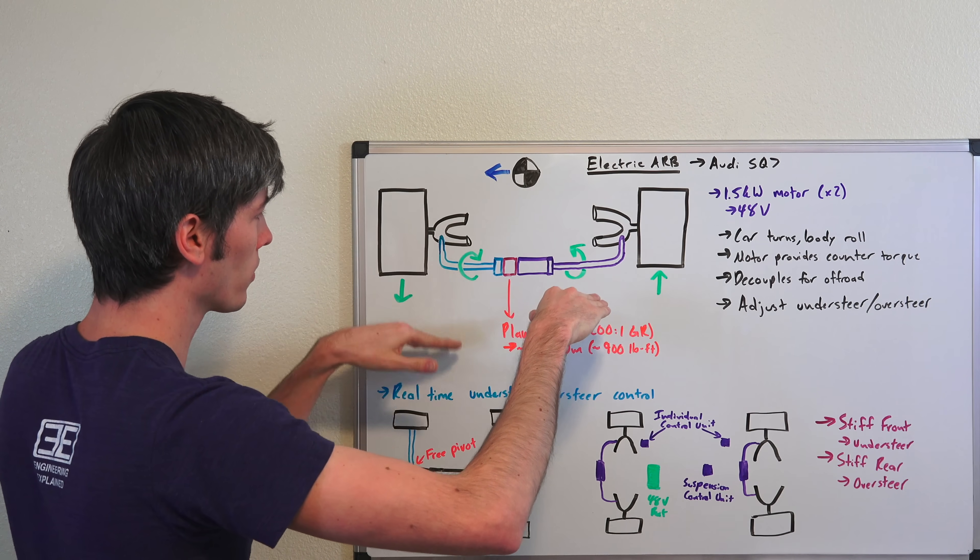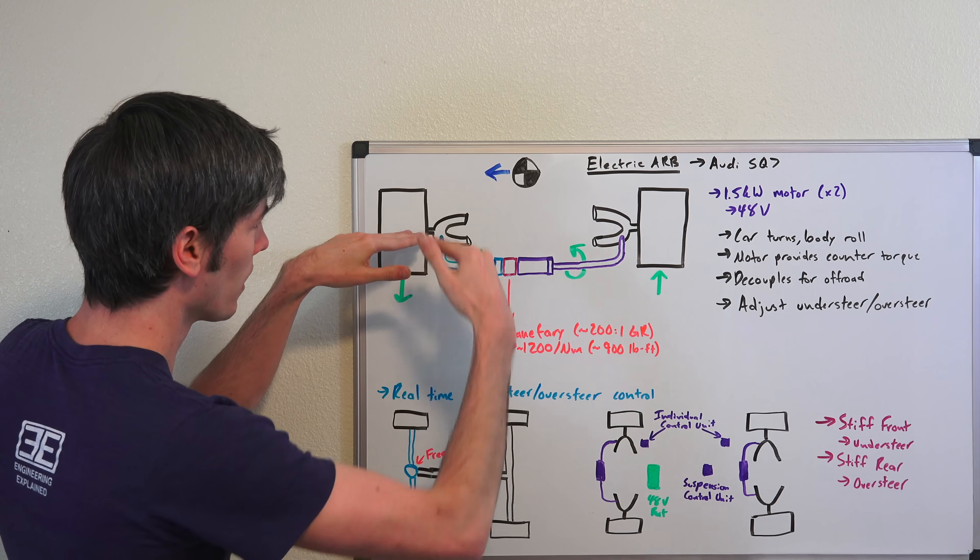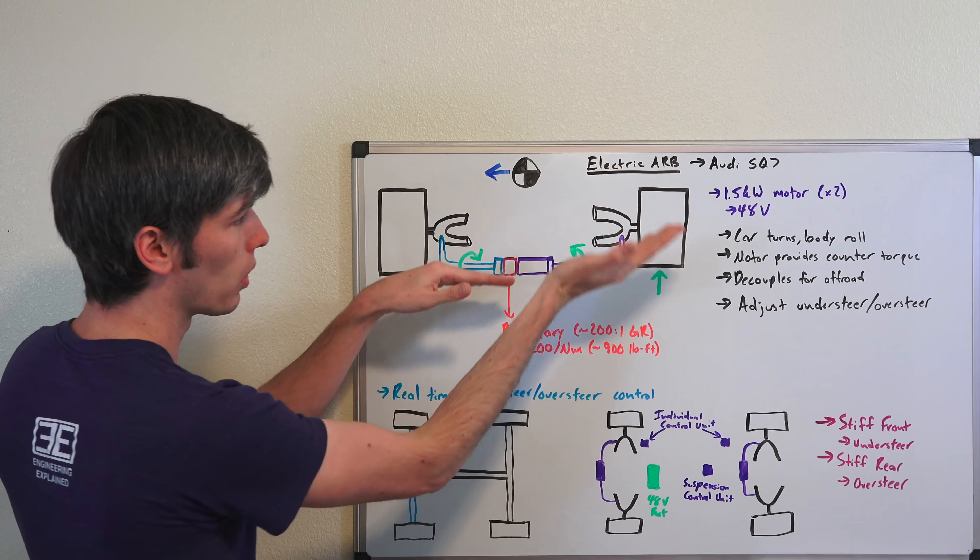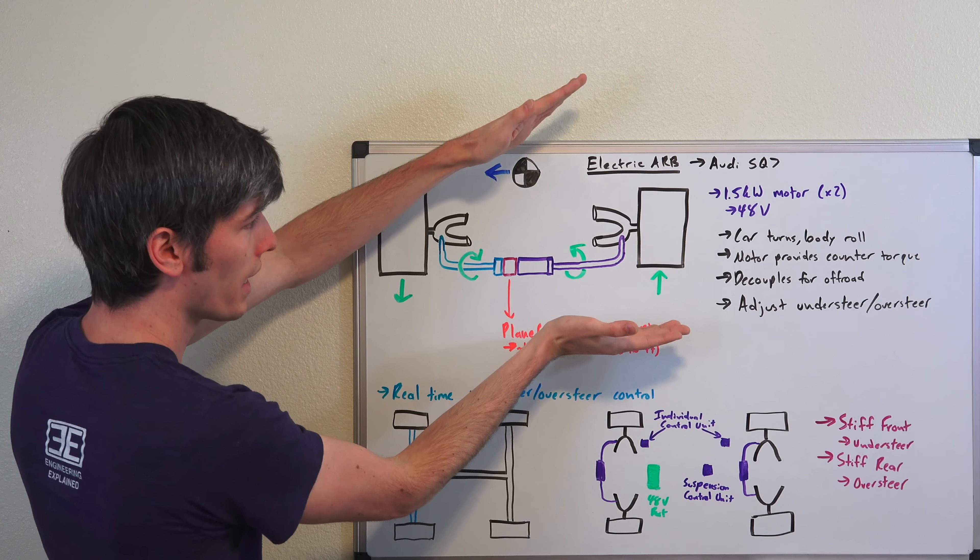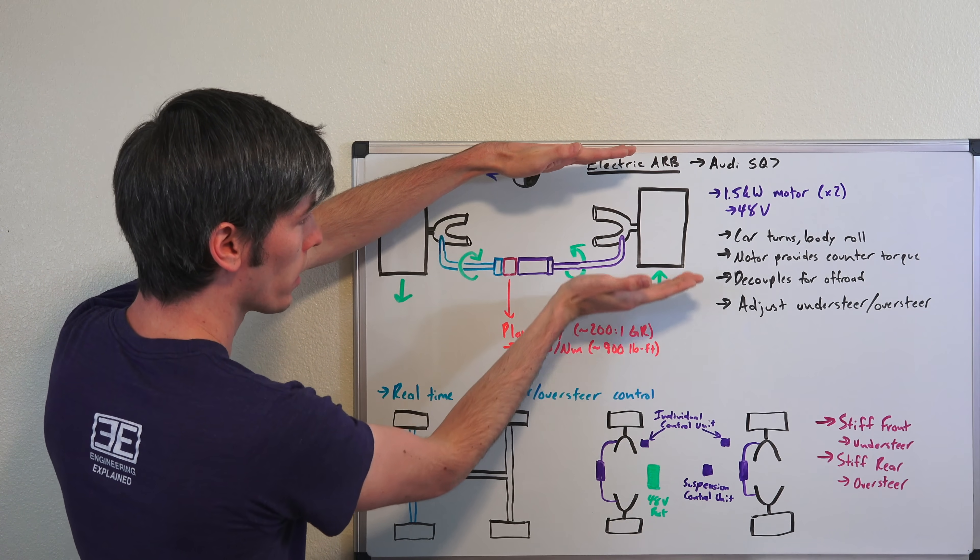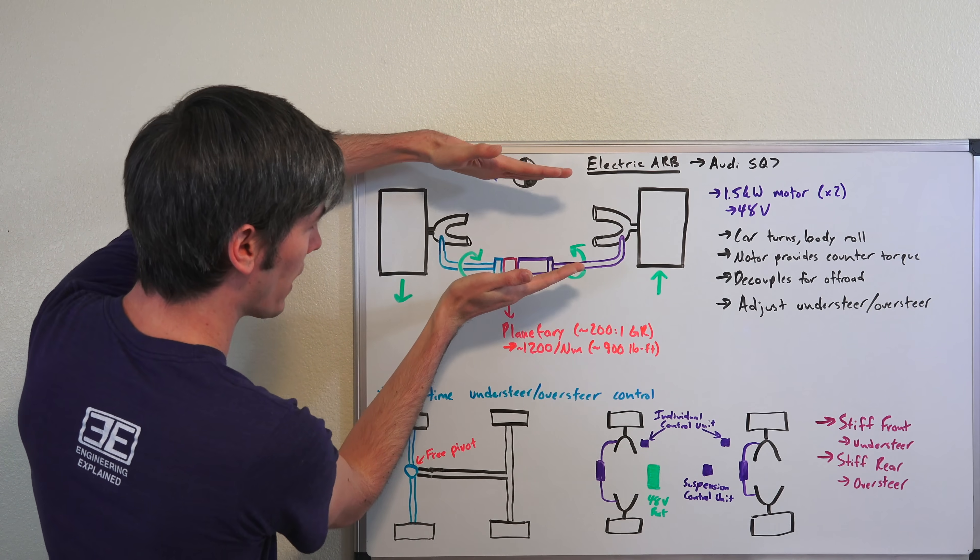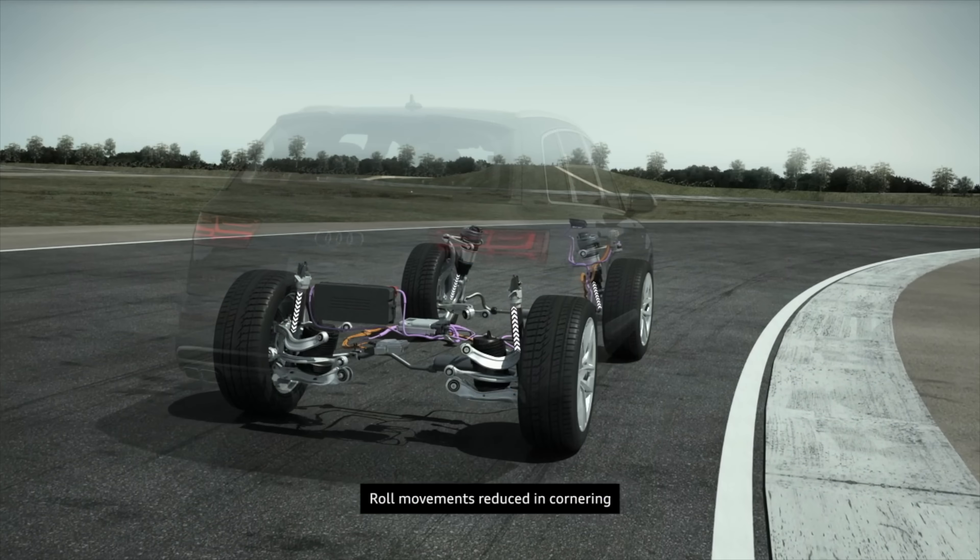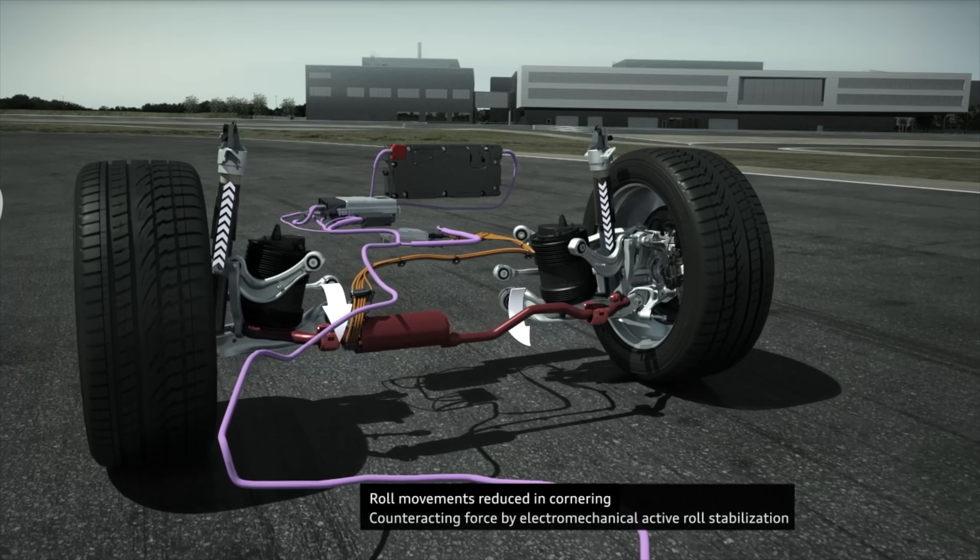It tries to press down that side, pushing it away from the body, or you could think of it as pulling up the other side. It flattens the vehicle out so the vehicle remains flat through that corner. Simply put, the car turns, the body rolls, and then the motor provides a counter torque to prevent that body roll.